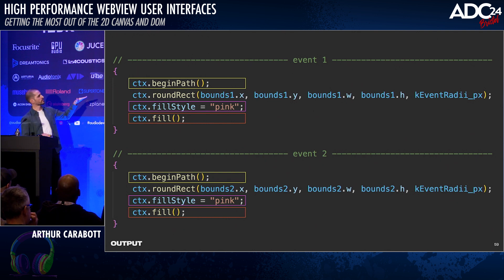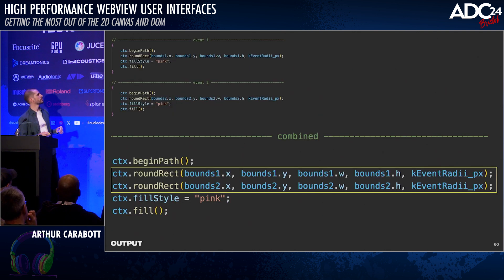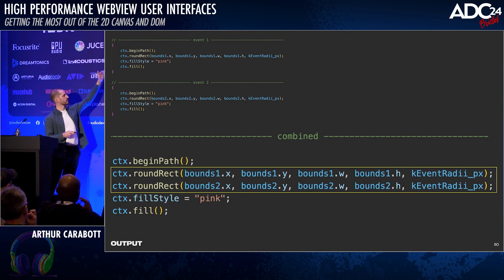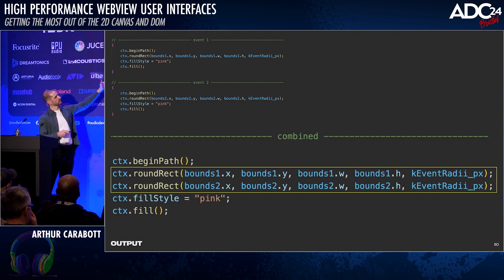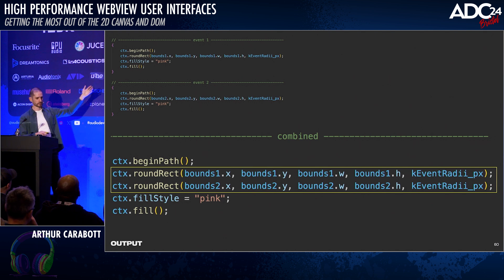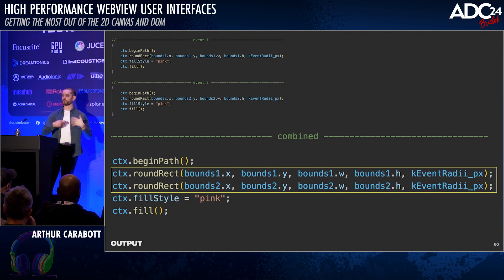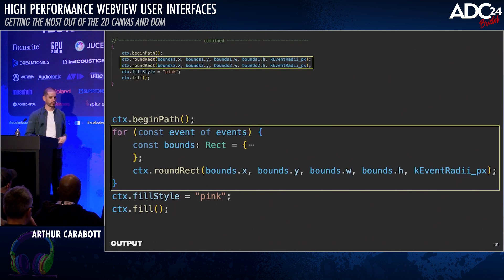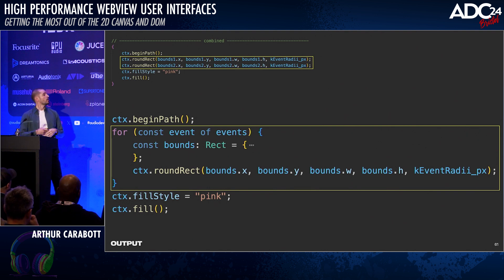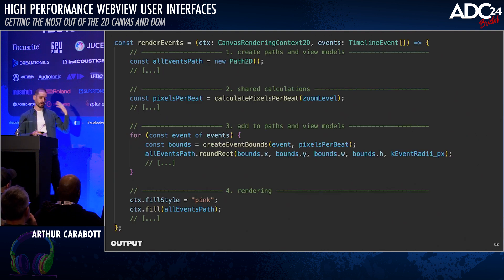Moving this forward into the fast path: we call the repeated lines — begin path, fill style, and fill — only once, and the things specific to individual events happen once per event. At that point, we can re-roll the code back into a loop, and we get something that starts to look like our fast version. That trick of inlining code is really useful for finding performance optimizations when you encounter slow code and need to refactor it.